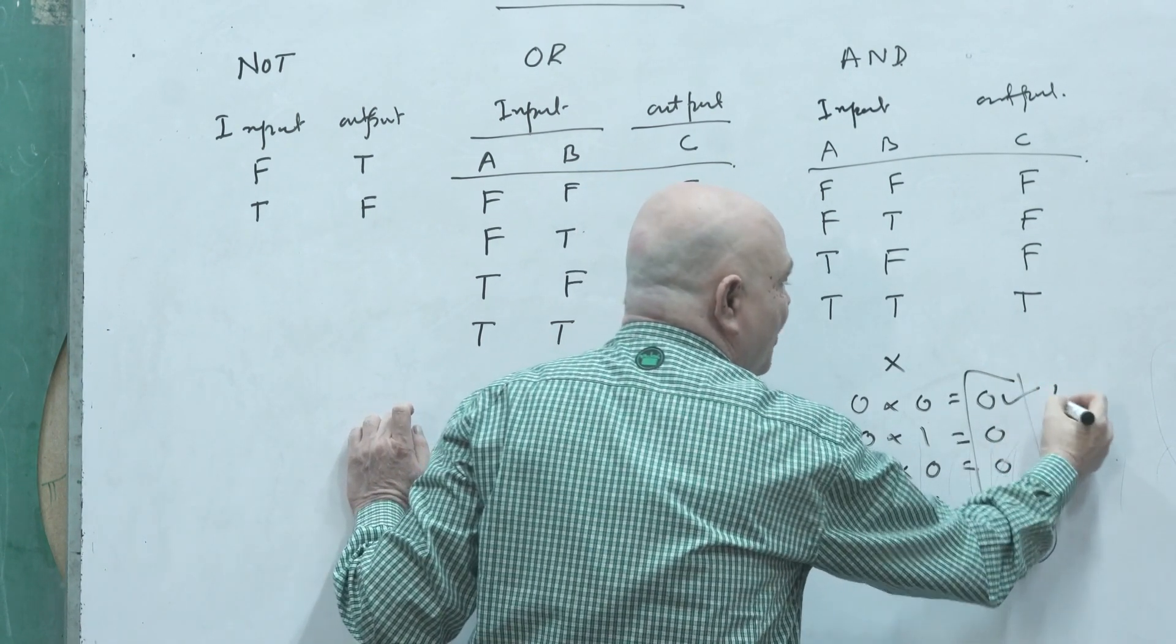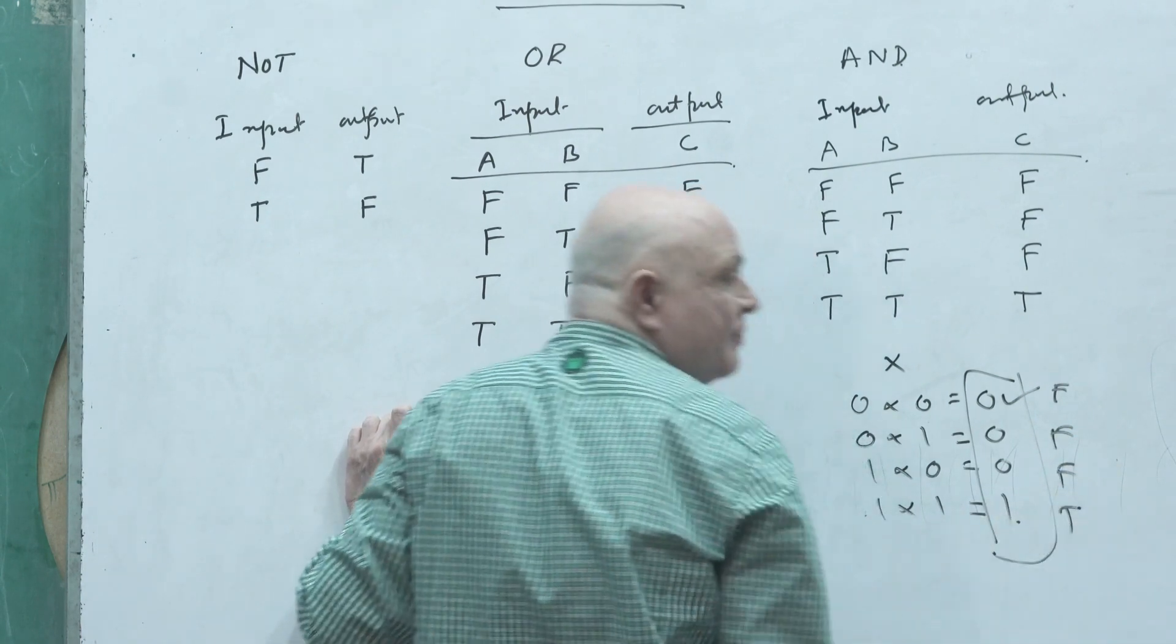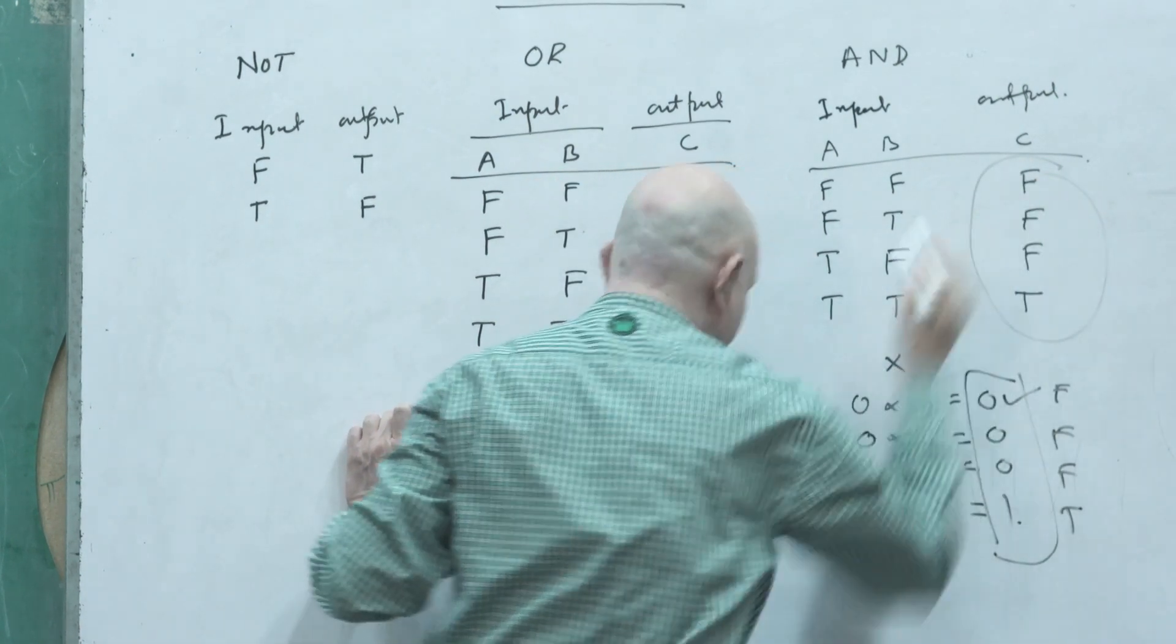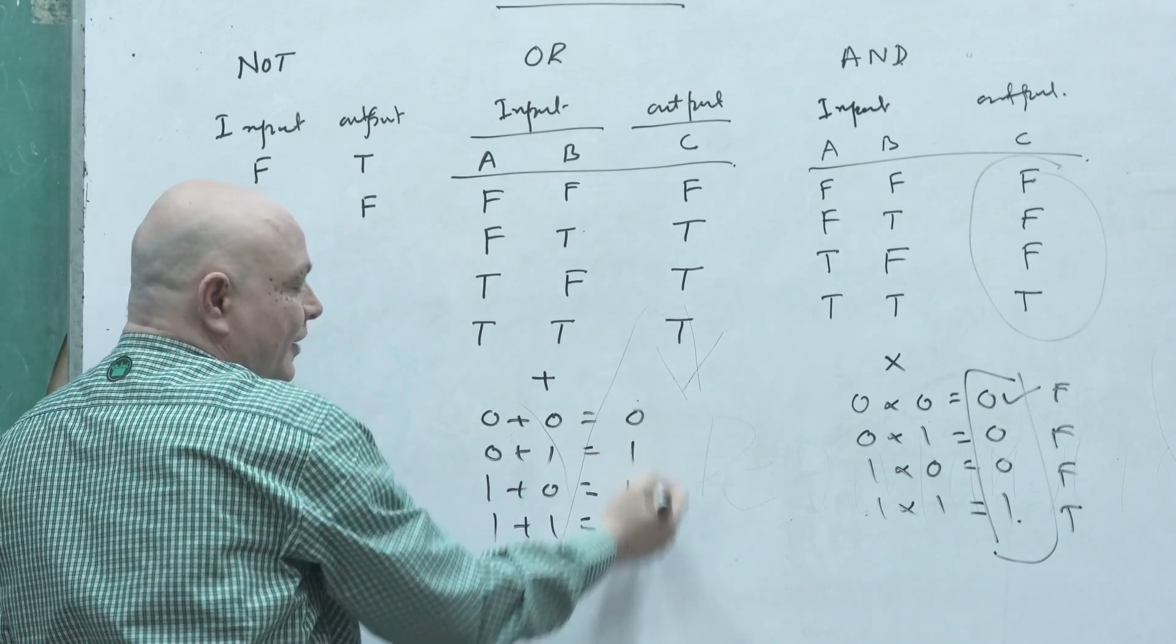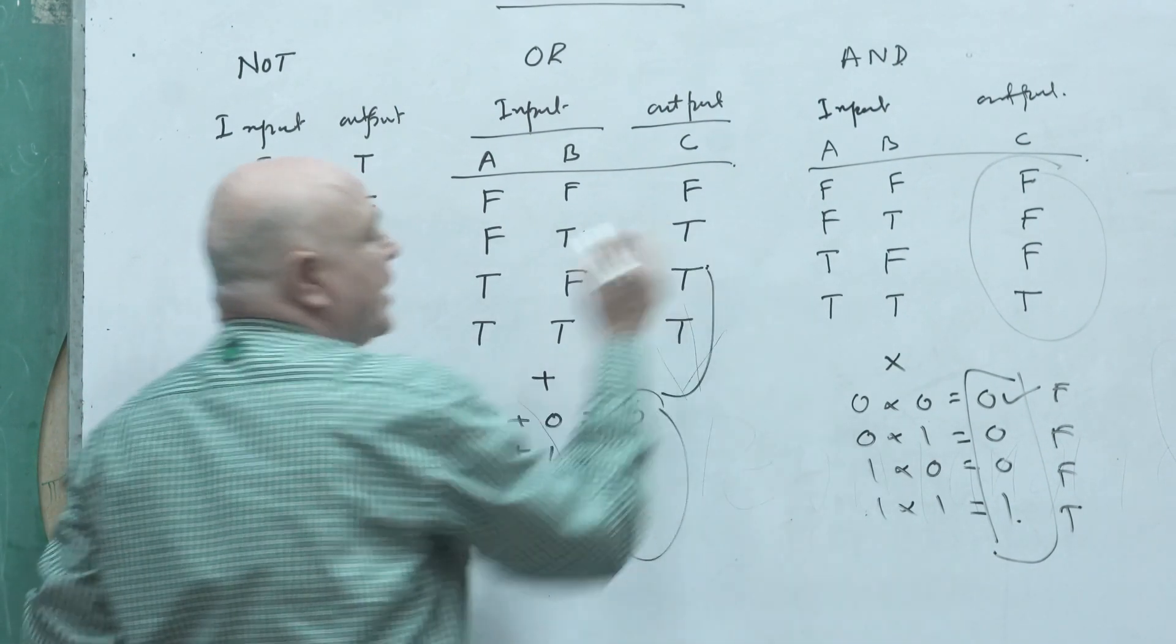So look again here. If zero is your false, false, false, true, this is the same thing. And if your zero is false, one is true, this is over here the same thing.